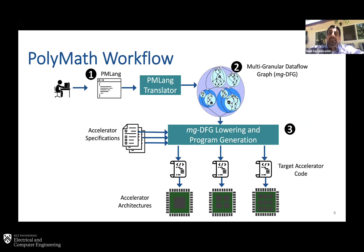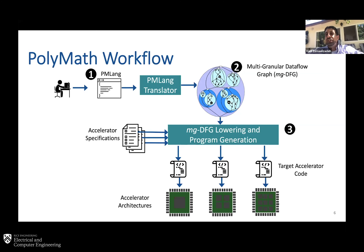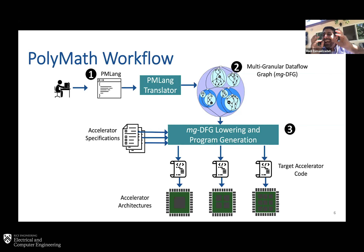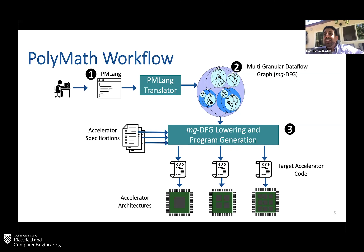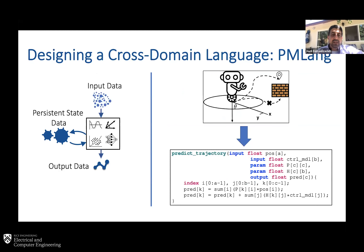I keep all the granularity available in the program structure in my intermediate representation so any accelerator can utilize it. After deciding, for example, to offload a convolution operation to an accelerator, you then need to schedule operations in a fine-grained manner. Knowing you have a convolution operation helps optimize data movements. We keep that context while also providing the fine-grain operations that we can schedule on top of your accelerator. That is the secret sauce.